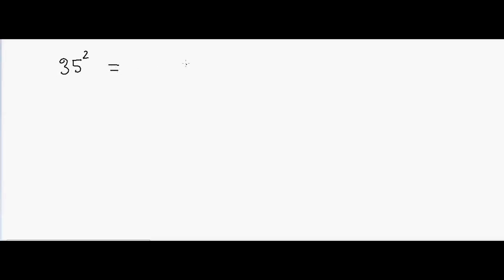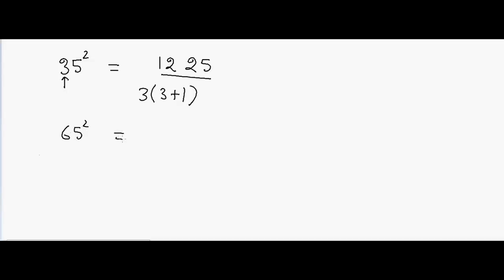To square 35, what I have to do is write 25 at the end, and then take 3 — which is the first digit — and multiply it with its increment. So 3 plus 1 is 4, and 4 into 3 is 12, so the answer is 1225.